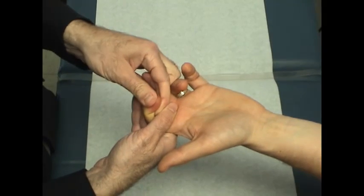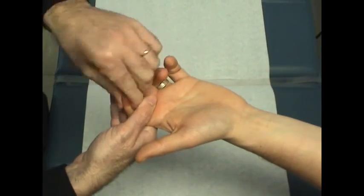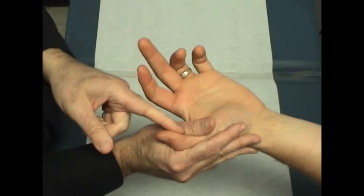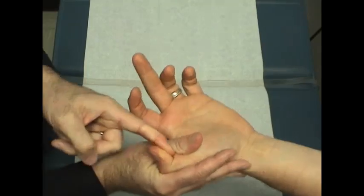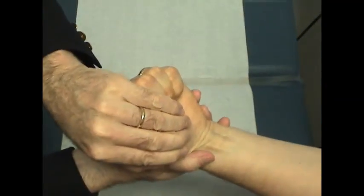It's very important to keep this hyperextended, because if he does this, I'm testing more of flexor digitorum profundus and superficialis. Pull. And then flexor pollicis longus. Good. Pull up like this. Flexor carpi radialis.